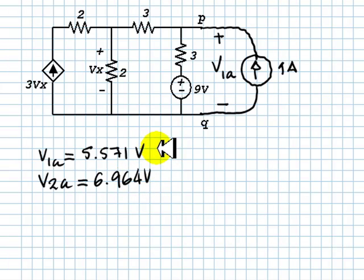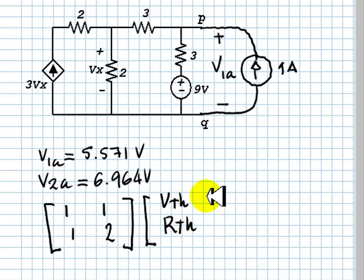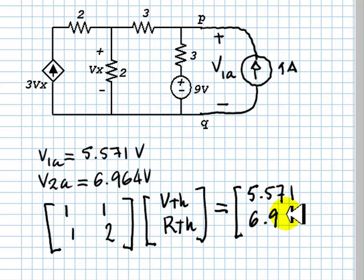Now, with those two values, we solve these systems of equations, 1, 1, 1, 2, as we saw in class, to determine VTh and RTh, where the independent terms are simply V1A, 5.571 volts, and V2A, 6.964.